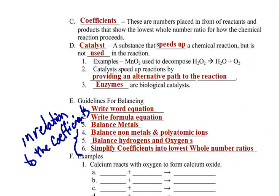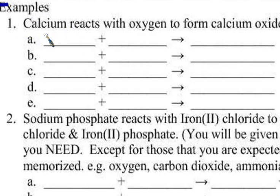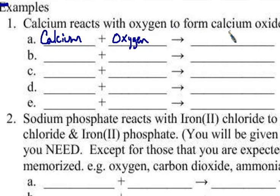We're going to start practice here with calcium reacting with oxygen to form calcium oxide. I'm going to expand this to make it easier for you to see what I'm writing. So the word equation is: calcium reacts with oxygen to form calcium oxide. Calcium is a plus two; oxide is a minus two. When they form, they'll make CaO.